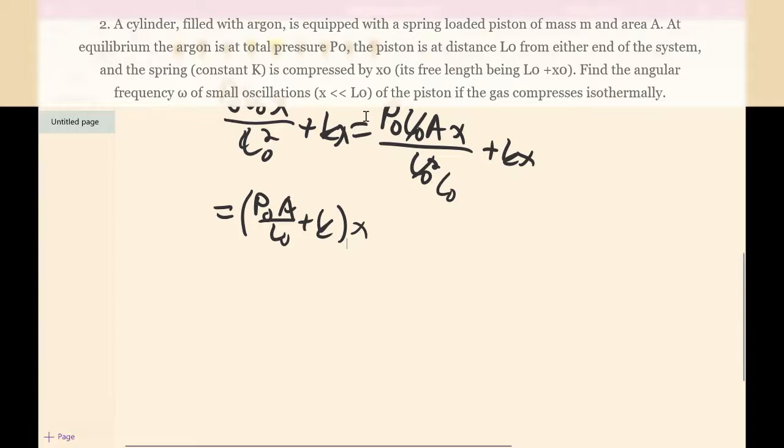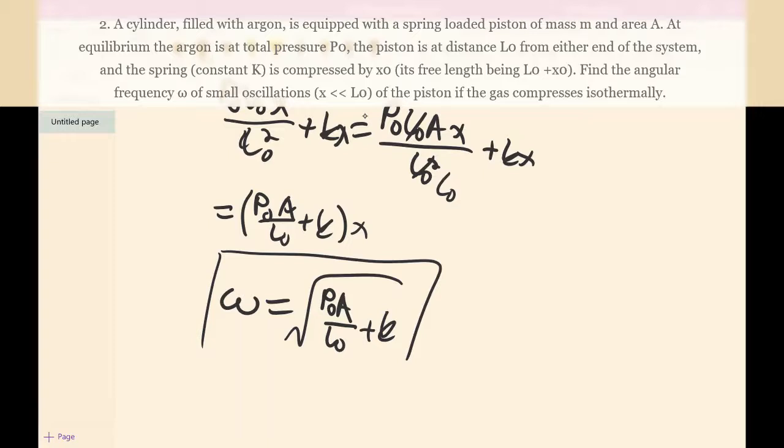Now we get this F equals something times x form that we want, so now it's pretty simple. Omega is just equal to square root of this part, which would just be P0 times A over L0 plus K. So yeah, that's the answer to number two. Does anyone have any questions about this problem? Okay, so it appears that no one has any questions, so yeah, that's my part.